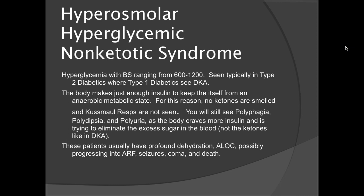Hyperosmolar hyperglycemic non-ketotic syndrome, or HHNS, is what we see with Type 2 diabetes. This is hyperglycemia with blood sugar ranging from 600 to 1,200 mg/dL, typically in Type 2 diabetics, whereas Type 1 diabetics see DKA. The body makes just enough insulin to keep itself from an anaerobic metabolic state, so they don't produce ketones. Because there are no ketones, you won't smell the acetone, and Kussmaul respirations are also not present with HHNS. You will still see polyphagia, polydipsia, and polyuria, as the body is trying to eliminate the excess sugar in the blood.